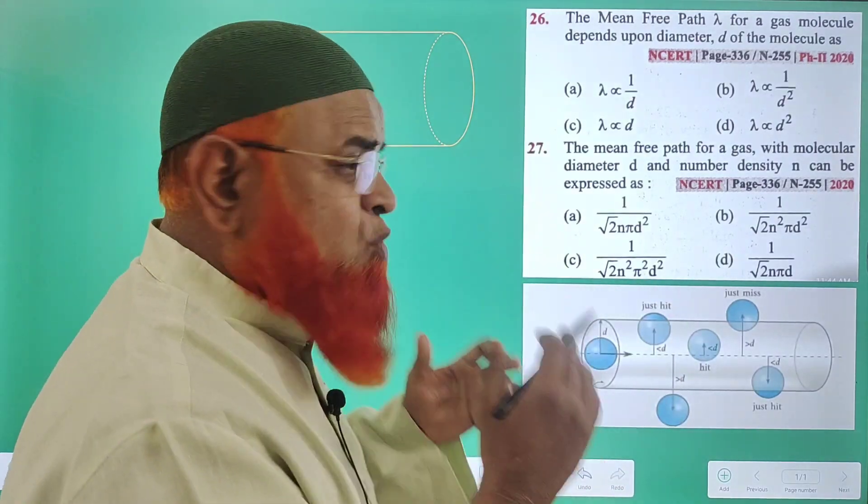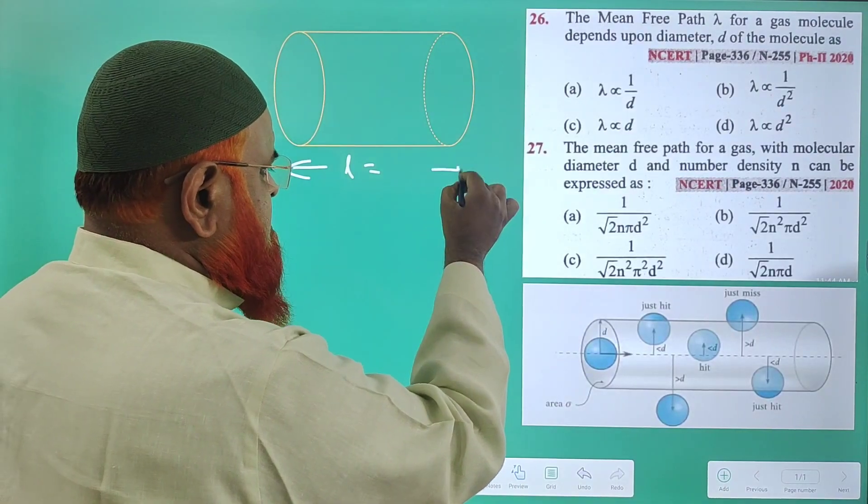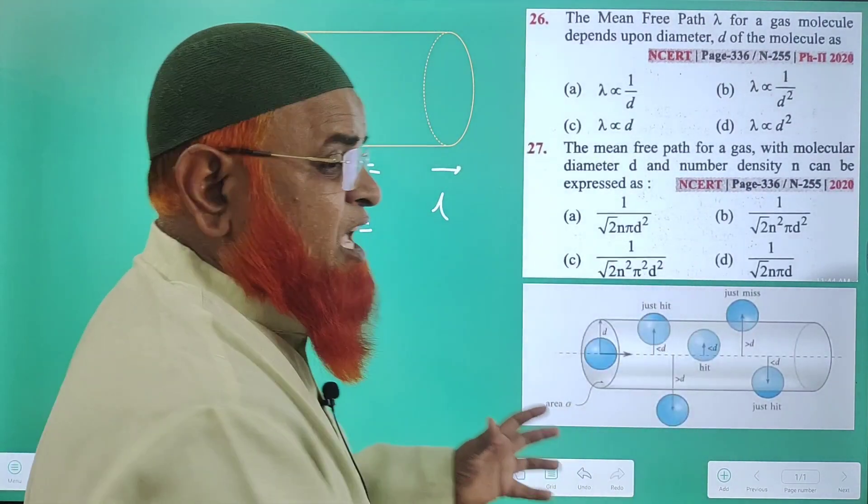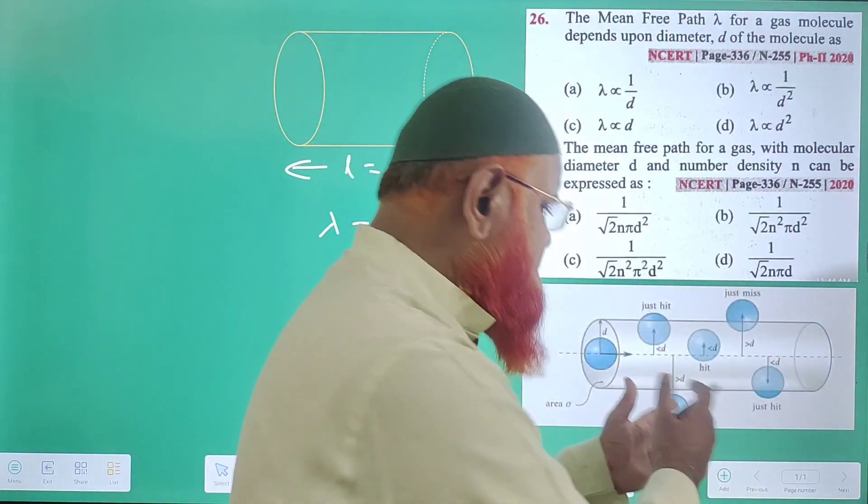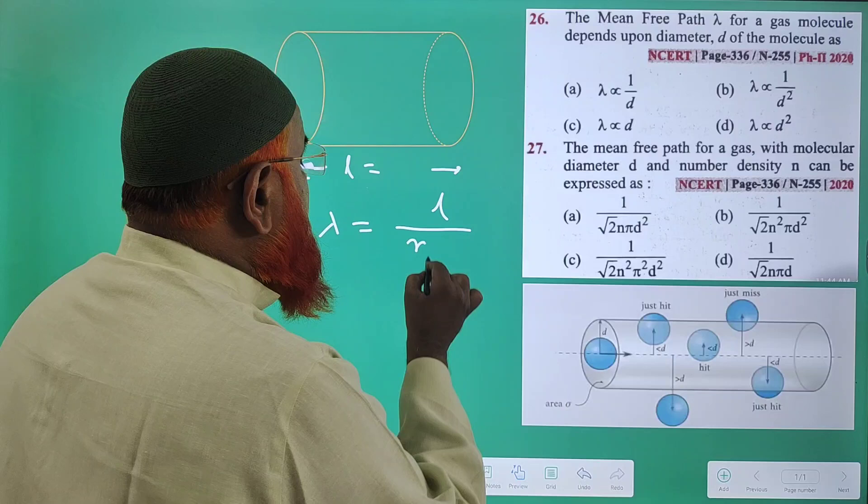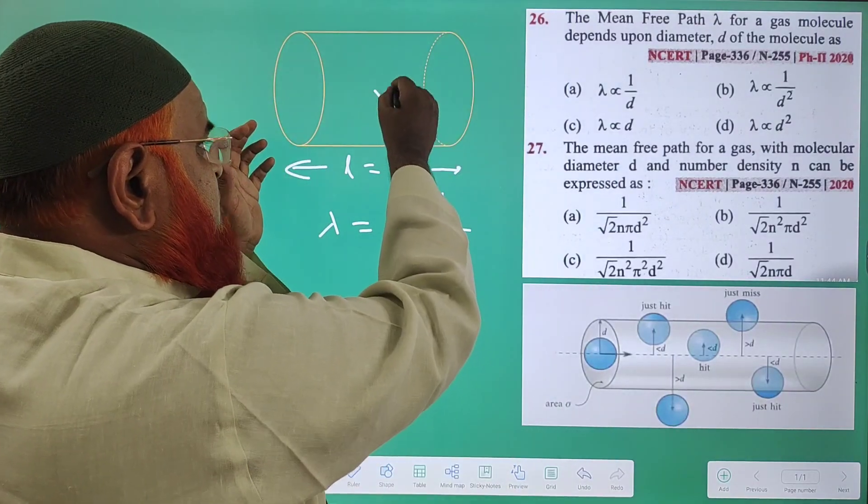What is the meaning of mean free path? Mean free path means the length of the imaginary cylinder in which collisions have taken place, divided by the number of collisions in the volume of that cylinder.